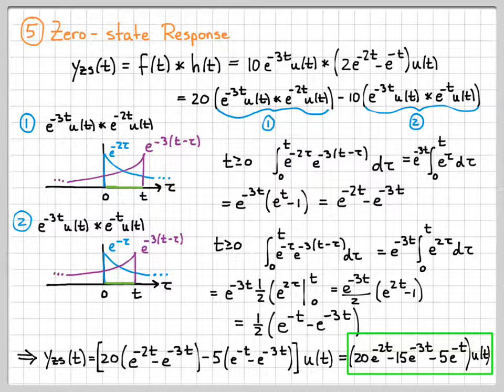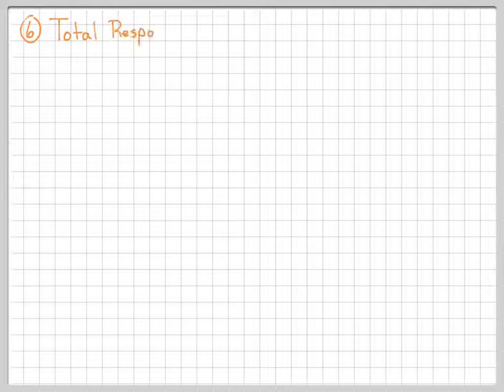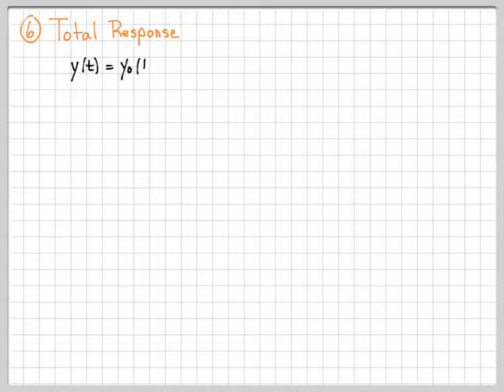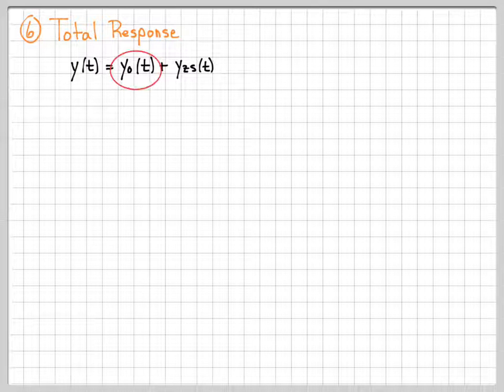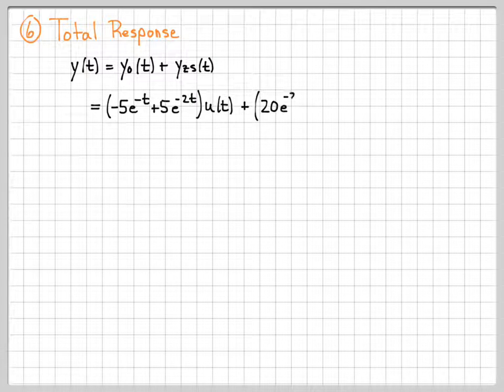All right, we're almost done now. We can actually finally go ahead and compute the total response. The total response is the sum of the zero state response and the zero input response. In video one way back when, or maybe it was video two, we computed what the zero input response was, and it was equal to this. Just now we finally completed computing what the zero state response was, and it was equal to this term right here.